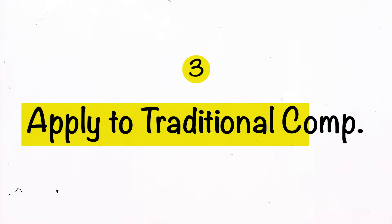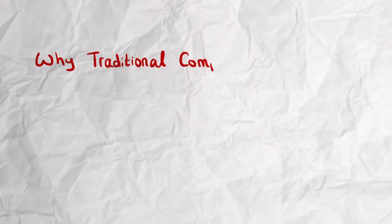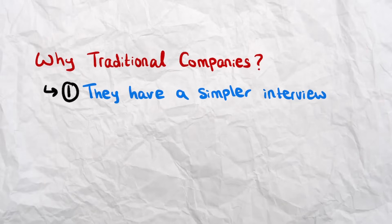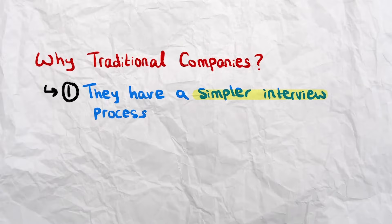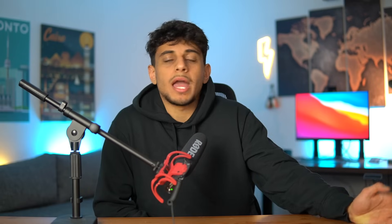Step three: take your small startup experience and use it to apply to traditional companies — companies like Toyota, GM, or Magna. They hire thousands of engineers every year and they're not as competitive as Apple, Google, or Tesla. The reason it's important to work for traditional companies before big tech is twofold. First, they have easier interview questions — the technical questions are usually not very technical at all, mostly behavioral. Second, you learn practical things you'll never get taught in school, like how to deal with vendors halfway across the world — something you need for jobs at tech companies.